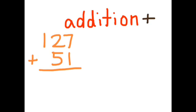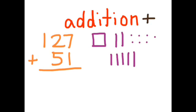The other thing we're going to think about is using our base ten pictures. We're good at that. One hundred twenty-seven is one hundred, two tens, and seven ones. Fifty-one has no hundreds, but it has five tens and one one.